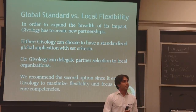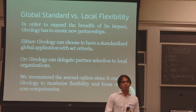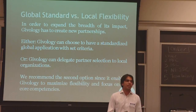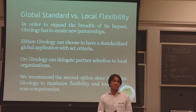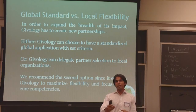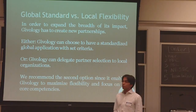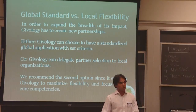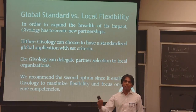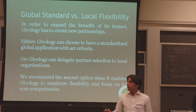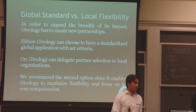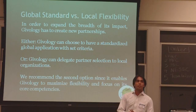Addressing the first problem — partnerships — there are basically two approaches Ecology can take. The first is a global standard: set criteria, a set application, a set interview process, and a set number of metrics to analyze and rank each project. The second is to be totally locally responsive and essentially outsource to someone who is more aware of the local community wherever they're investing. The problem with global standardizing is applying it consistently across the world.